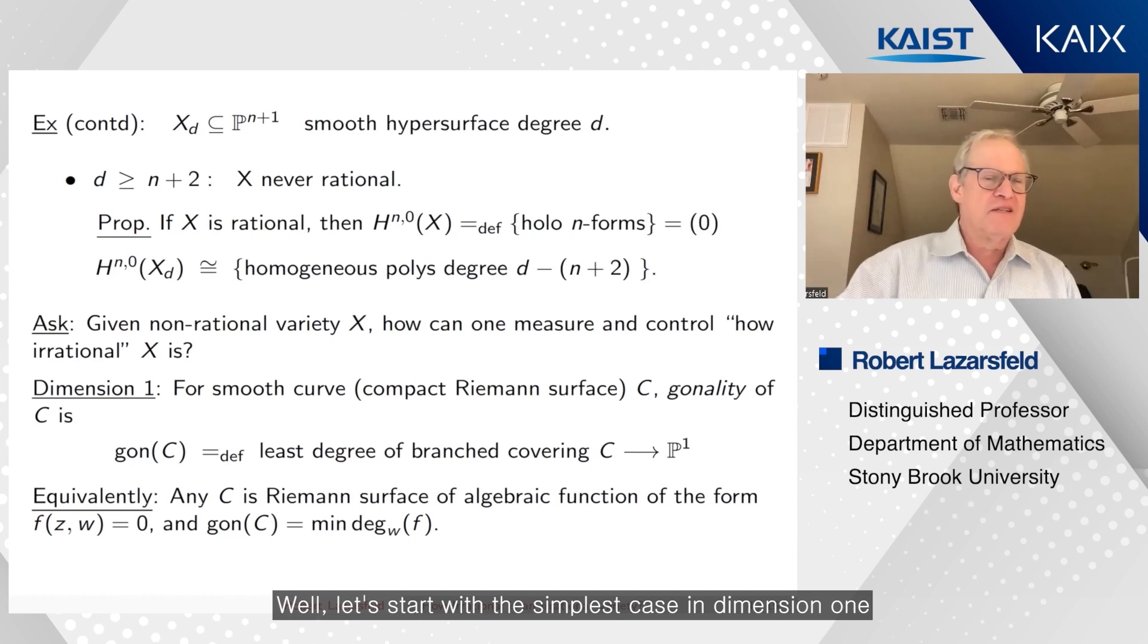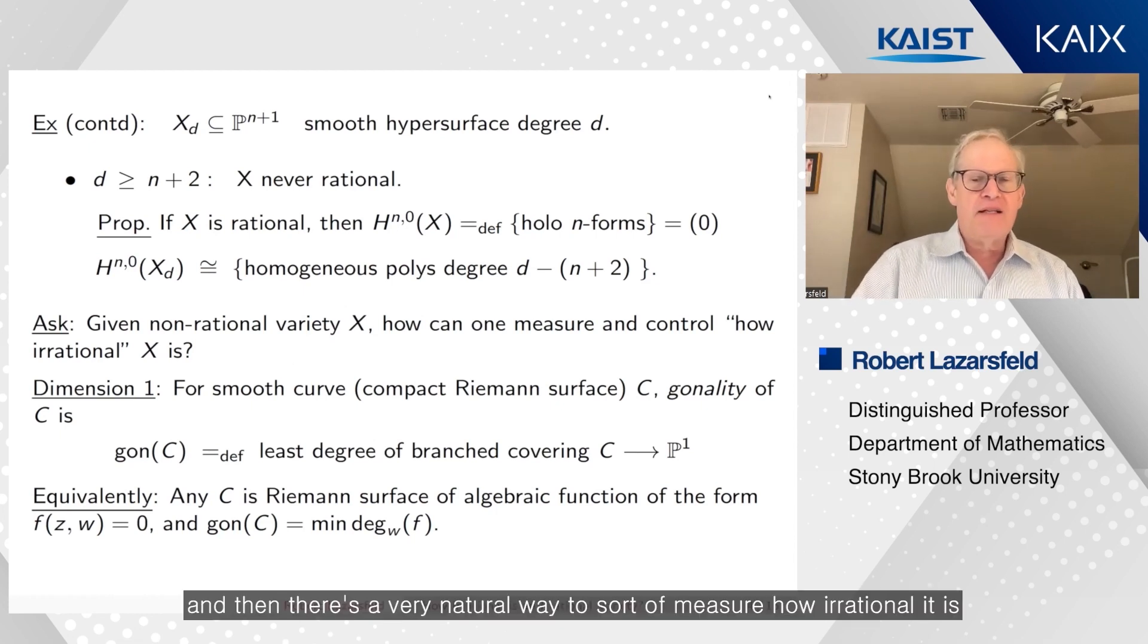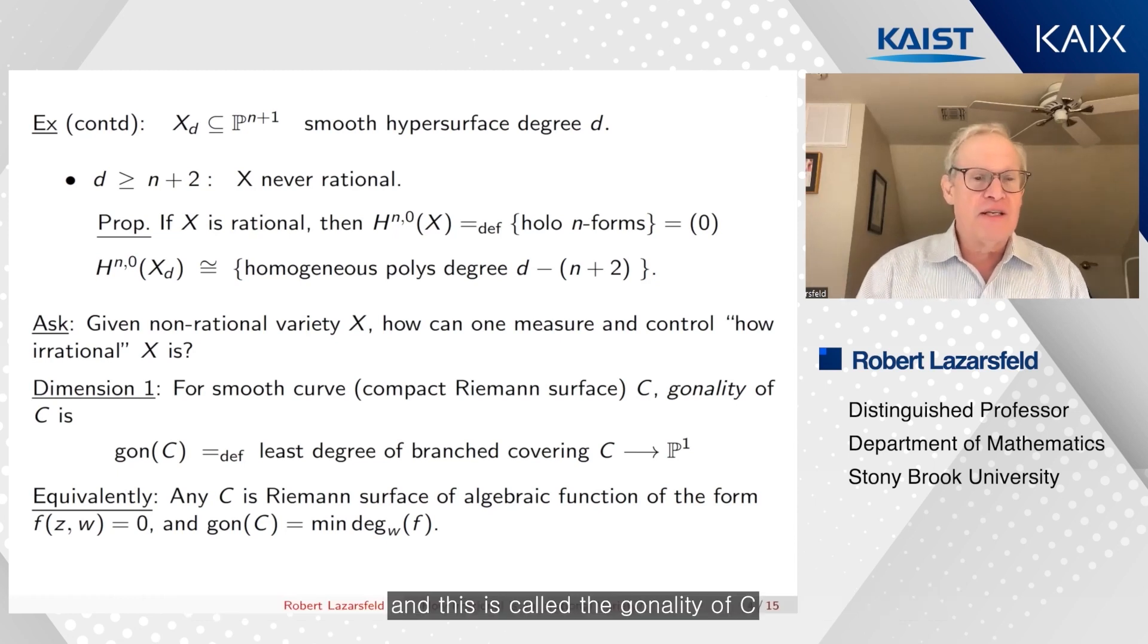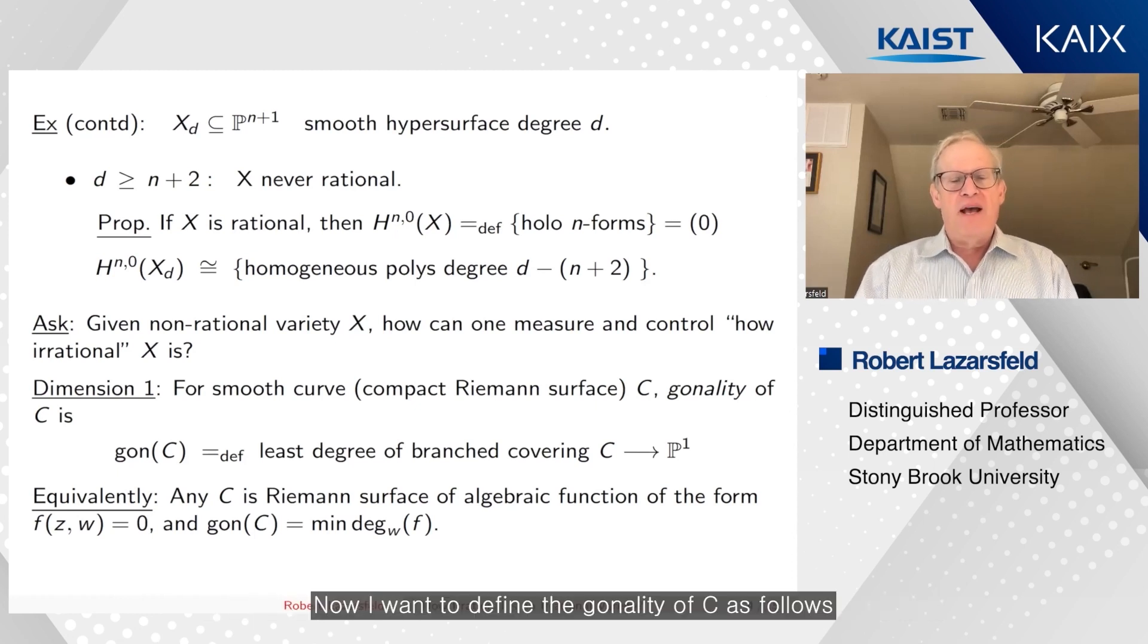So how can we measure how irrational an irrational variety is? Well, let's start with the simplest case in dimension one. So let's start with a compact Riemann surface. And then there's a very natural way to measure how irrational it is. And this is called the gonality of C. So C will be a compact Riemann surface, a smooth projective curve.